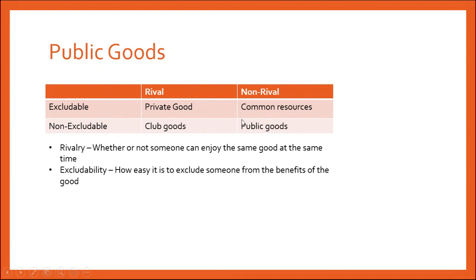Something that is non-rival and non-excludable is what are often called public goods. National defense is the prototypical public good. It's non-rival in that if the army is protecting Baltimore, it's also protecting us here in Frederick. That's non-excludable — when the army protects Baltimore, they can't necessarily stop people within Baltimore from being protected.